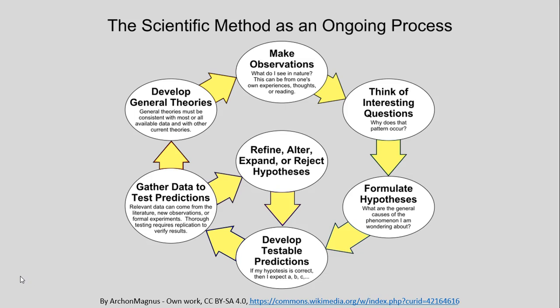There are many different visualizations we could take of the scientific method and how it continuously is an iterative and ongoing process. I've chosen this one, which you can easily find on the Wikipedia page for the scientific method, but there are many others out there that are similar. We'll walk through this one step by step. If we choose a starting point, it's often this top circle or oval here — making observation.